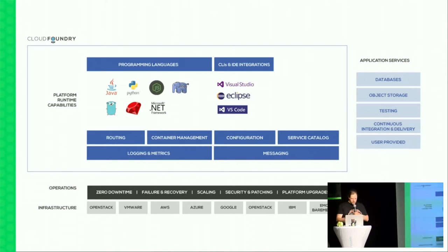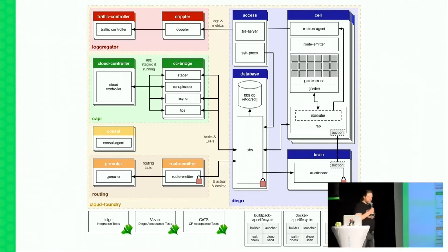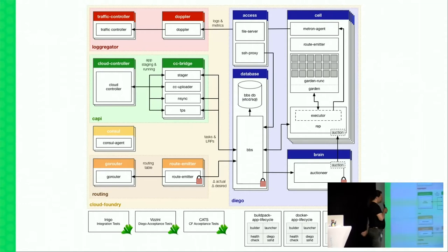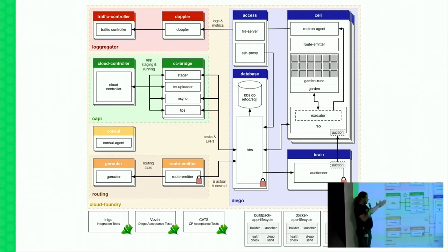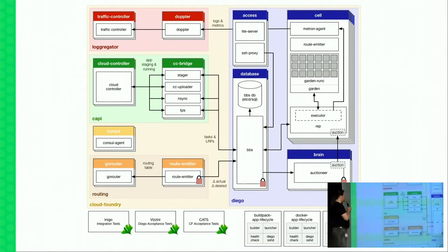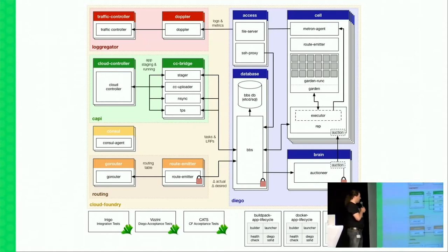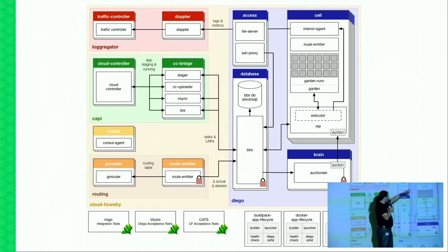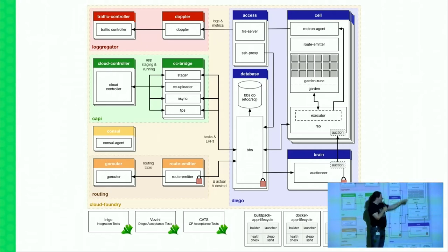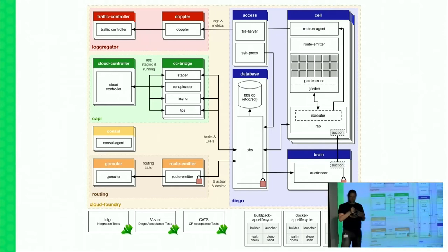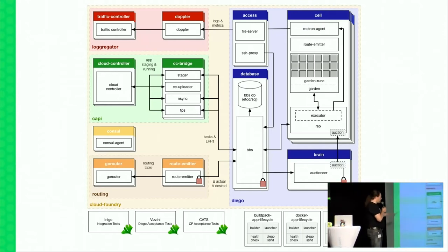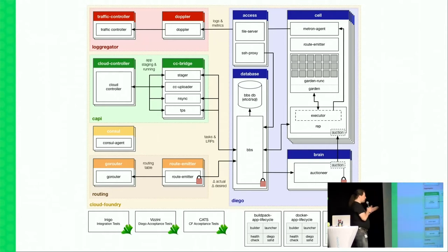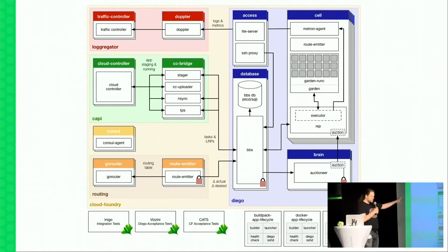Cloud Foundry is a pretty complex product. The overall architecture has core components: there is a cloud controller, which is the important part from the user's point of view — that's where the API is running and where CF push actually talks to. Then there is Diego, the runtime component, which makes sure things are running on virtual machines called cells. Inside those VMs, containers run — those gray boxes where the developer's application runs and actual code is executed. There's also logging, metrics, tests, and lifecycle management.